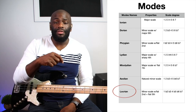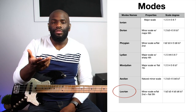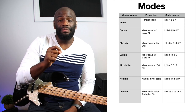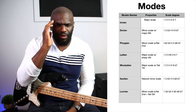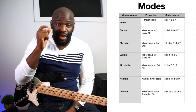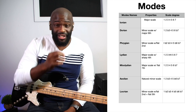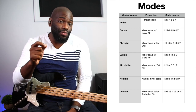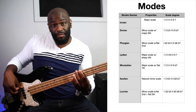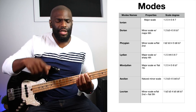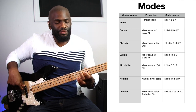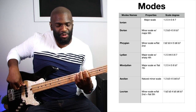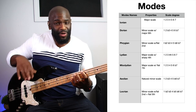Last but not least, the Locrian scale. This one's a little more tricky — it's a minor scale with a flat two and a flat five. It's similar to Phrygian: it starts off the same way with the flat two, but the Locrian also has a flat five. So when you get to the five, you flat that as well. Flat two — then when you reach it — flat five. That's the regular five, but you flat the five for the Locrian.